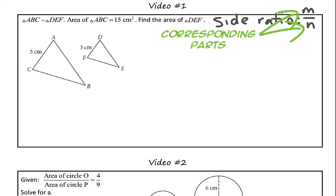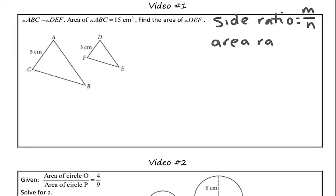Well, if the side ratio is M over N, then the ratio of the corresponding areas, or the area ratio, between the similar polygons would be M squared over N squared.